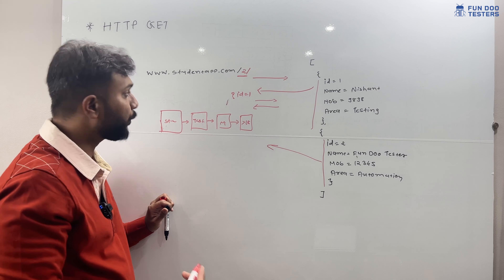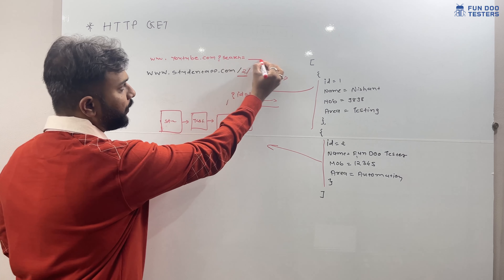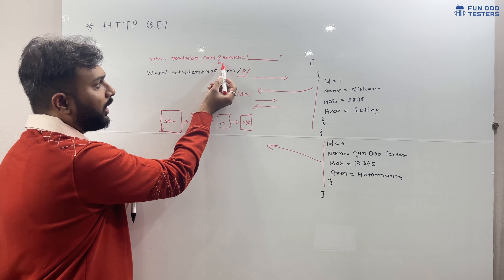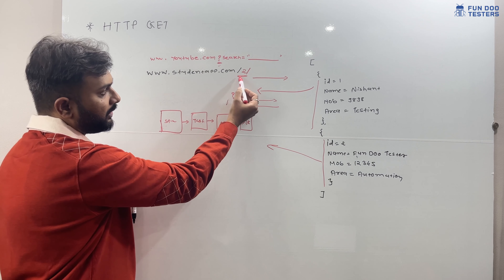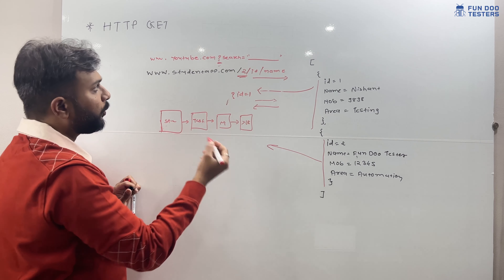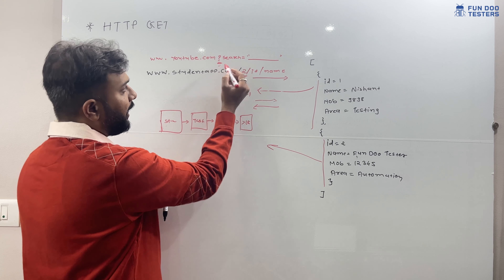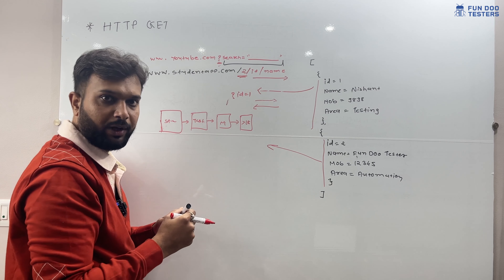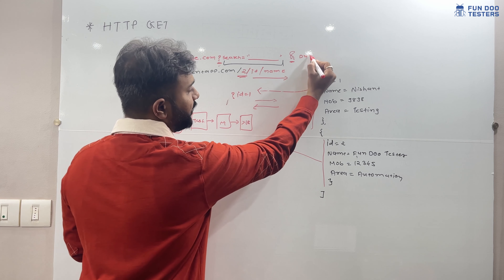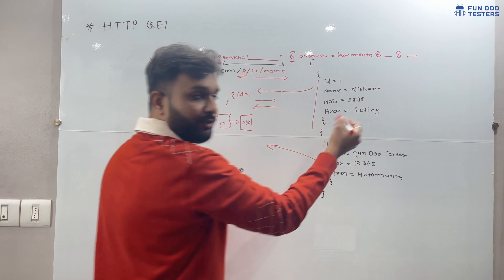When we use a query parameter, for example searching on YouTube, the URL would be www.youtube.com?search=particular_song_name — we are querying data. Whenever you see something starting with a question mark, that is a query parameter. If it starts with a slash, that is a path parameter. For multiple query parameters, we use the ampersand symbol — for example ?search=songname&duration=last_month.